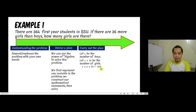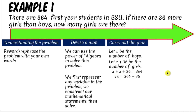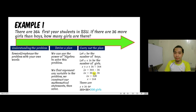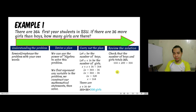Carrying out the plan: combining the two x terms gives 2x + 36 = 364. Subtracting 36 from both sides: 2x = 328. Dividing by 2: x = 164. So there are 164 boys. But the problem asks for the number of girls, so we add 36 to 164, giving us 200 girls.